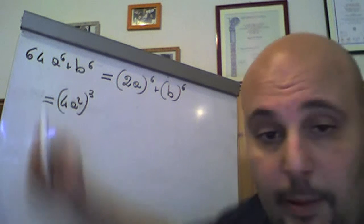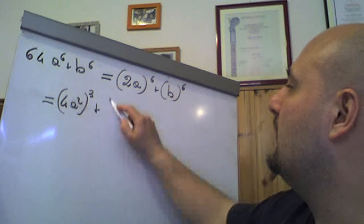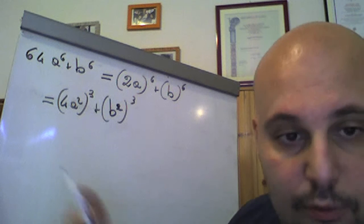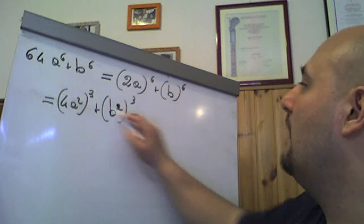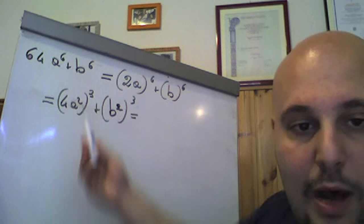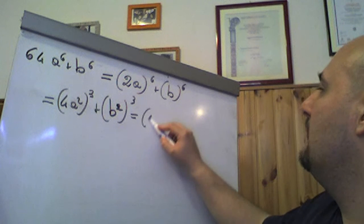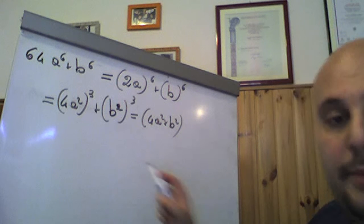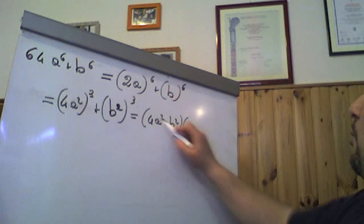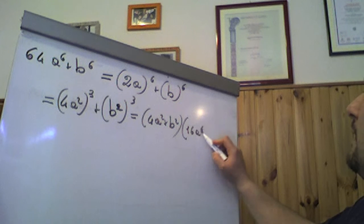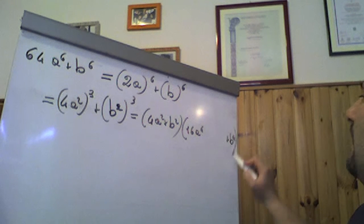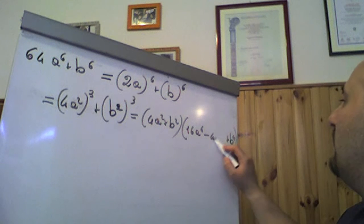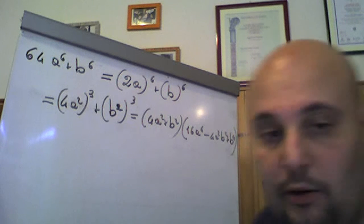Come vedete, 4 al cubo è proprio un 64. Mentre questo lo scriviamo come b elevato al quadrato, tutto al cubo — ricordo che vale la regola della potenza di potenza, 2 per 3 uguale 6. Quindi, a questo punto avrò che il mio a cubo più b cubo, dove a è 4a², b generico è b², sarà somma delle basi: 4a² più b², che sappiamo non si può scomporre, per il falso quadrato — che è il quadrato del primo, 16a⁴, il quadrato del secondo che è b⁴, abbiamo il meno, cambiamo il segno, non mettiamo il 2: meno 4a²b². Eccola qua, la nostra scomposizione.